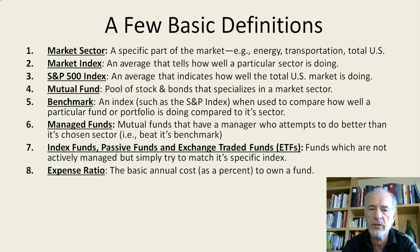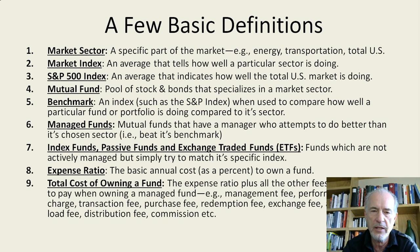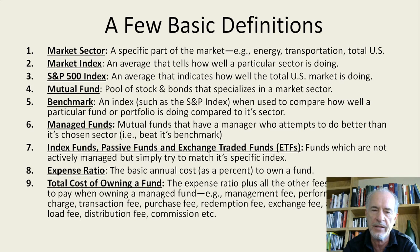Expense ratio is the basic cost to you for owning a mutual fund. There's always going to be a cost that goes to the company that runs the fund, and it's listed as a percentage of your total investment paid to the company per year. In addition to that, many times there can be other costs, so the total cost is your expense ratio plus any additional costs. These can be management fees, performance fees, sales charges, transaction fees, purchase fees, redemption fees, etc. It's very important to know what the total cost of owning your fund is, and sometimes it might be a little tricky to find these out. Be careful about that and know what they are.